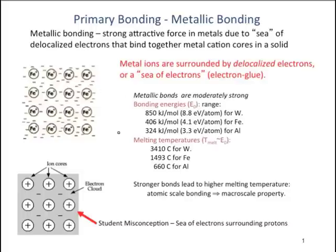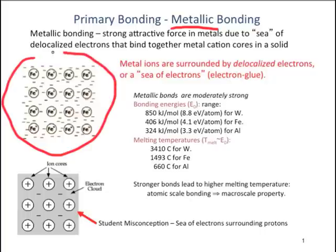There are three types of primary bonding: ionic, covalent, and metallic. This diagram demonstrates metallic bonding. Metallic bonding occurs in metals, as the name suggests. In metallic bonding, each metal atom donates its outer shell electrons to a shared electron sea, and each metal atom becomes a positively charged core.